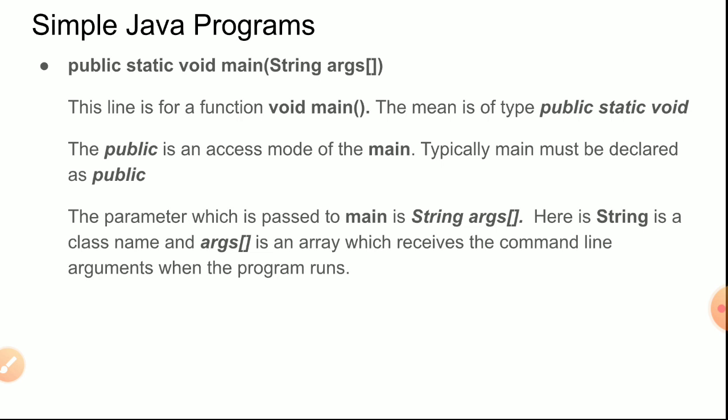Public static void main — main is of type public static void. 'Public' is the access mode — main must be declared as public. You cannot declare it as private, protected, or default. The parameter passed to main is String args — 'String' is a class name, not a primitive data type, and the capital S is important. 'args' is an array which receives command line arguments when the program runs. Even if the array is empty, that's fine.